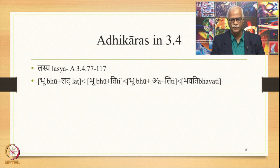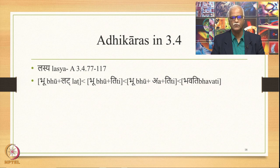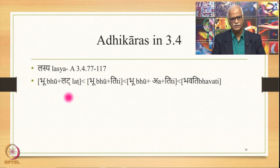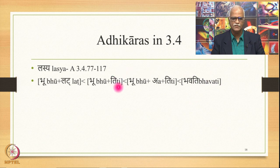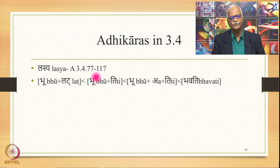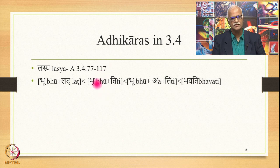Then we go to 3.4. The important Adhikara is Lashya, governing section 3.4.77 to 3.4.117. Bhu plus Lat, then Lat gets substituted by Ti by 3.4.78, then A comes in between by 3.1.68, and other rules apply to give Bhavati. Ti enters the derivation because of the sutra appearing in this section. All the forms of all 10 Lakaras and their substitutions are stated in this section.